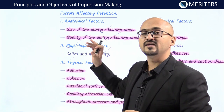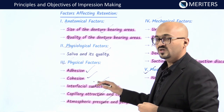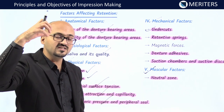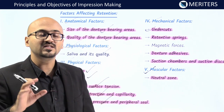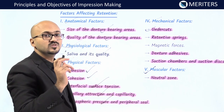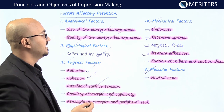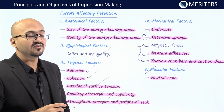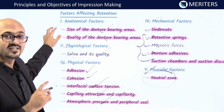Physical factors include adhesion, cohesion, interfacial surface tension, capillarity, atmospheric pressure, and peripheral seal, which will be discussed subsequently. Mechanical factors include undercuts — for example, maxillary anterior undercuts or distobuccal undercuts — which can help retention but may also cause soreness if not adequately relieved. Additional factors like retentive springs, magnets, denture adhesives, suction chambers, and suction discs can enhance retention. Muscular factors involve the balance of muscles understood through the concept of the neutral zone, which enhances retention.